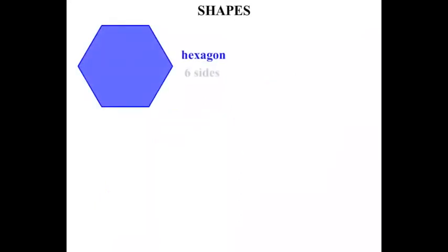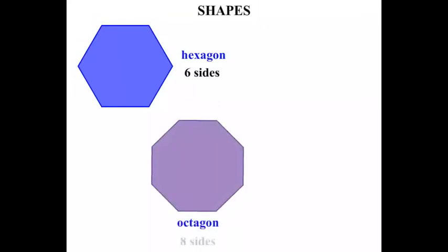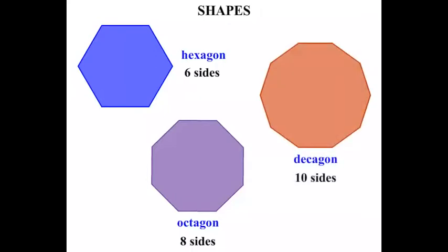A hexagon has six sides. An octagon has eight sides. A decagon has ten sides.